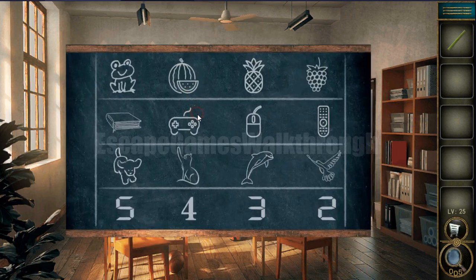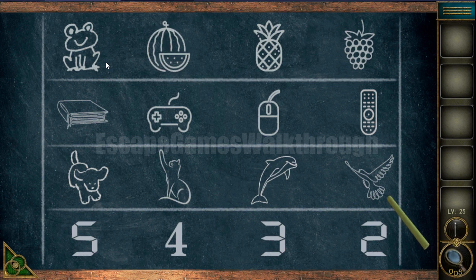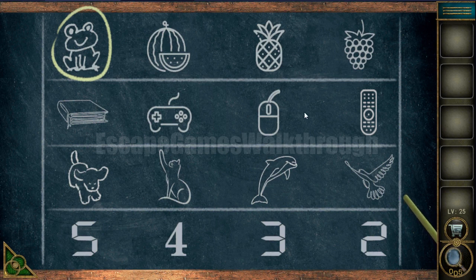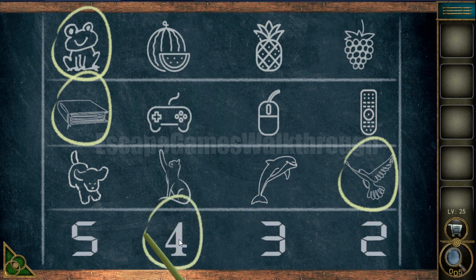We've got a green chalk. With the chalk we can draw on the board. The task is to look at each row and define what is wrong. In the first row we can see fruits, and only a frog is not a fruit. In the next row these are electronic devices and a book is not. Then here we can see a bird flying. These are LCD digits, and this digit 4 is just a common digit — common text type.